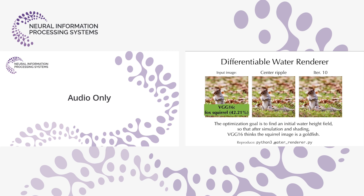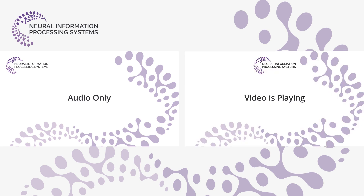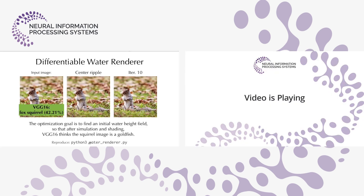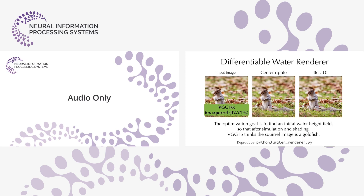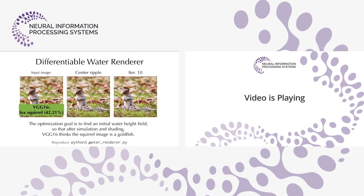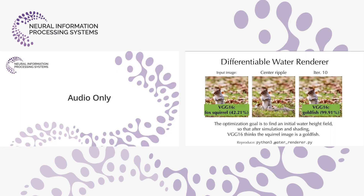Initially a fox squirrel image is correctly classified by VGG as a fox squirrel. If we add a ripple to the center, more interestingly we can generate a very subtle water wave that causes VGG to classify the image as a goldfish — an adversarial water wave that can fool VGG. As a human you can clearly see it's still a squirrel. We can easily combine differentiable modules into interesting deep learning systems.